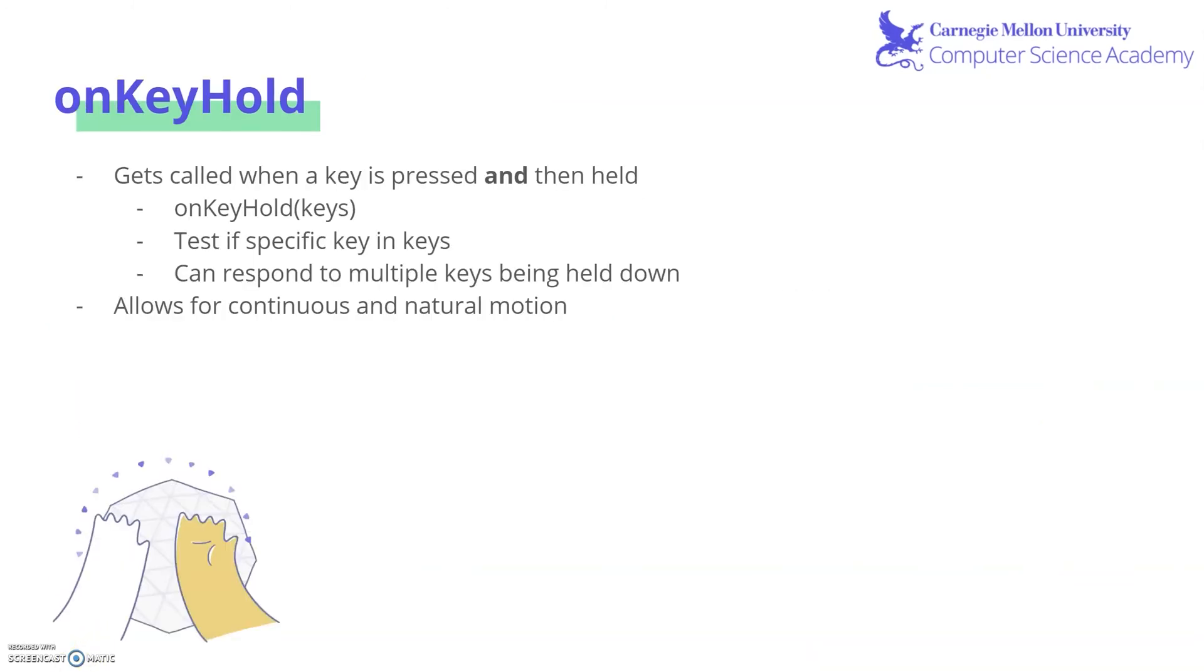Another built-in function that we can use is onKeyHold, which can get called when a key is pressed and then held. To call it, we use the function onKeyHoldKeys. To test if a specific key is clicked, we have to test if it is in keys. Since onKeyHold can actually respond to multiple keys being held down simultaneously, the keys parameter is any key that has been pressed currently.